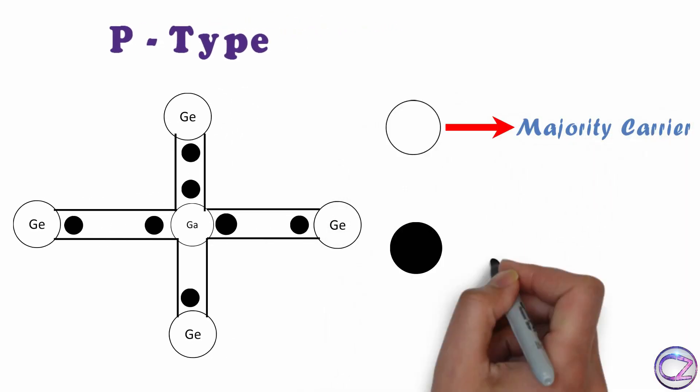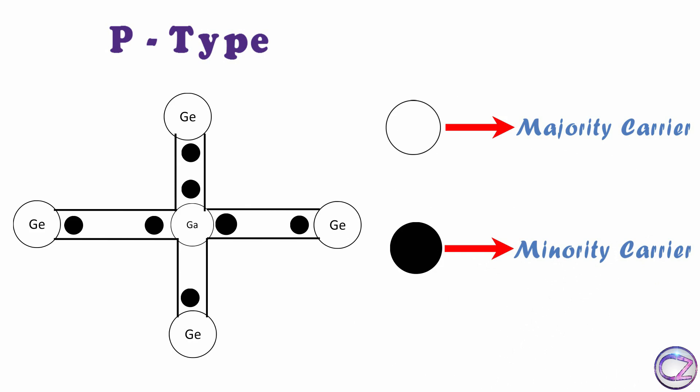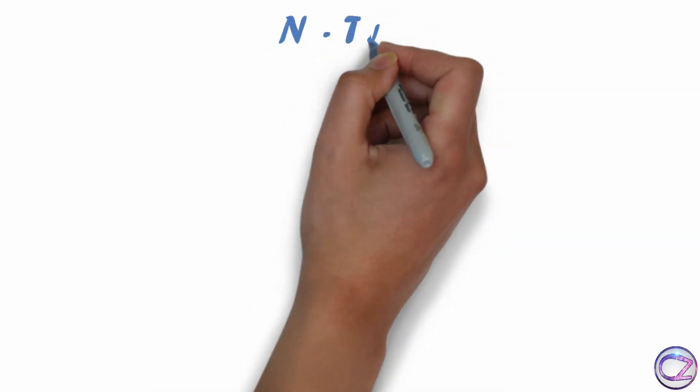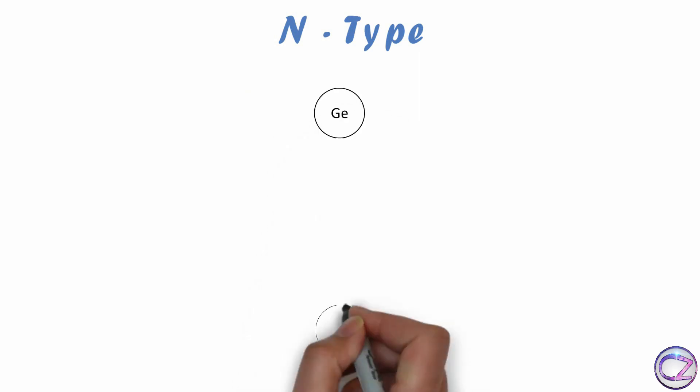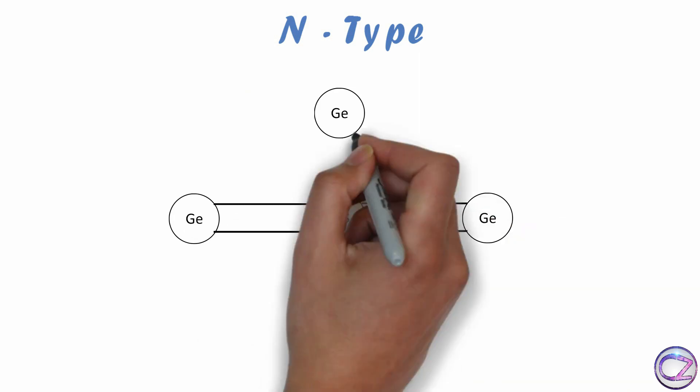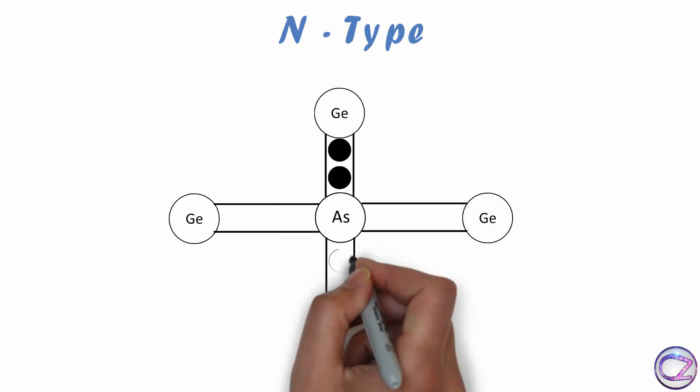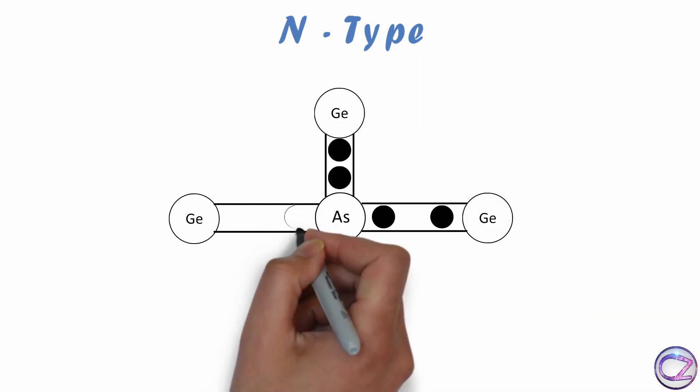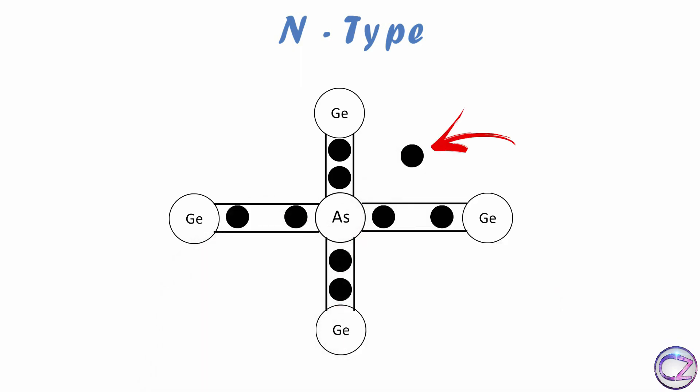Now, n-type. If we replace a germanium atom with a valency 5 element atom, like Phosphorus, Arsenic, Antimony, etc., then we will get a complete covalent bond and also an extra electron. See, this extra electron is completely free. So this free electron transports electricity.